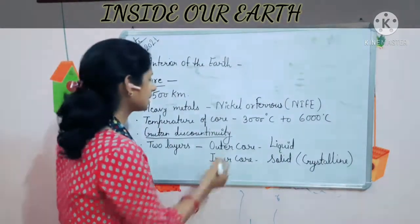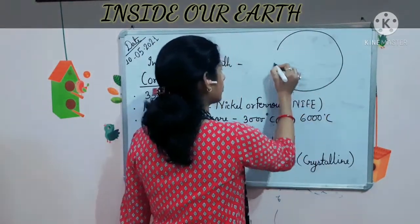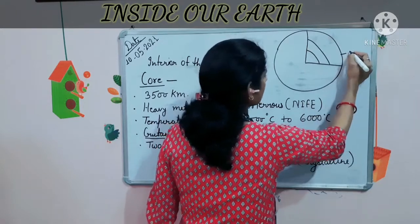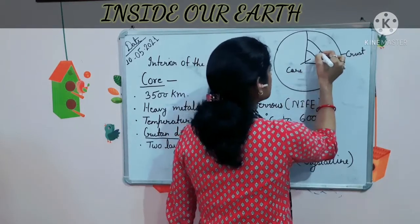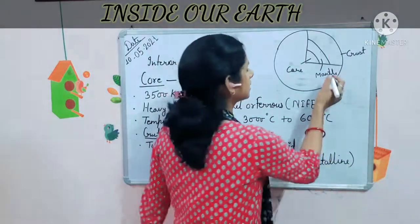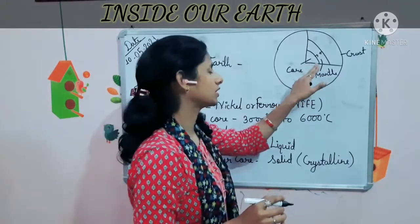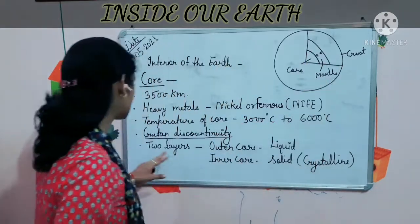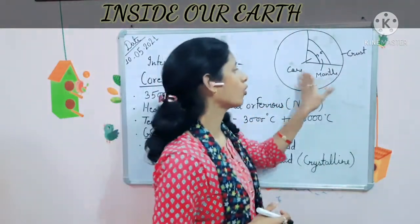Gutenberg discontinuity — the line that divides the core from the mantle is known as the Gutenberg discontinuity. The mantle lies beneath the crust and above the core. This boundary line dividing the core from the mantle is called the Gutenberg discontinuity.